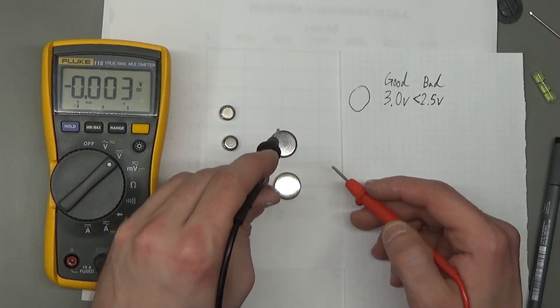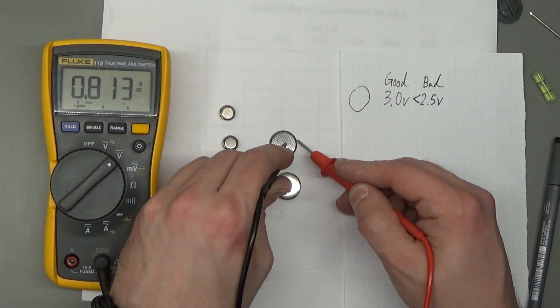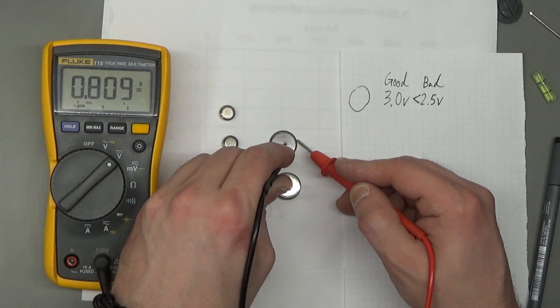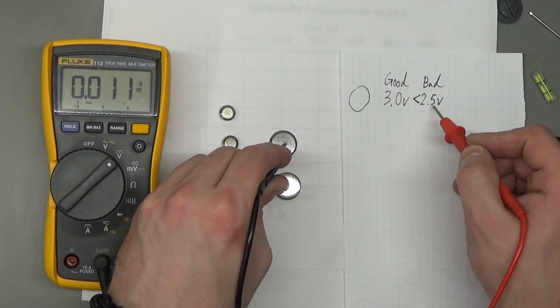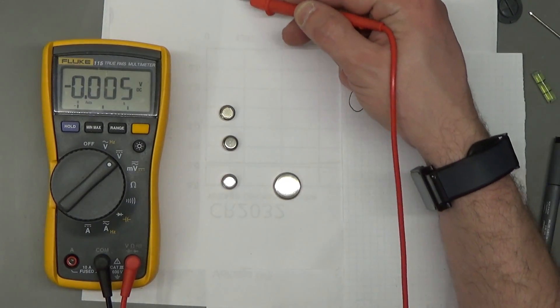We'll do that again. So black lead in the center, red lead on the side, and that one is actually less than 1 volt. So that is definitely bad. As I said, if it's less than 2.5 volts, it is a bad battery.